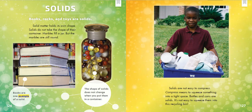Solids. Books, rocks, and toys are solids. Solid matter holds its own shape. Solids do not take the shape of their container — marbles fill a jar, but the marbles are still round. Books are one example of a solid. The shape of solids does not change when you put them in a container. Solids are not easy to compress. Compress means to squeeze something into a tight space. Bottles and cans are solids; it's not easy to squeeze them into a recycling bin.